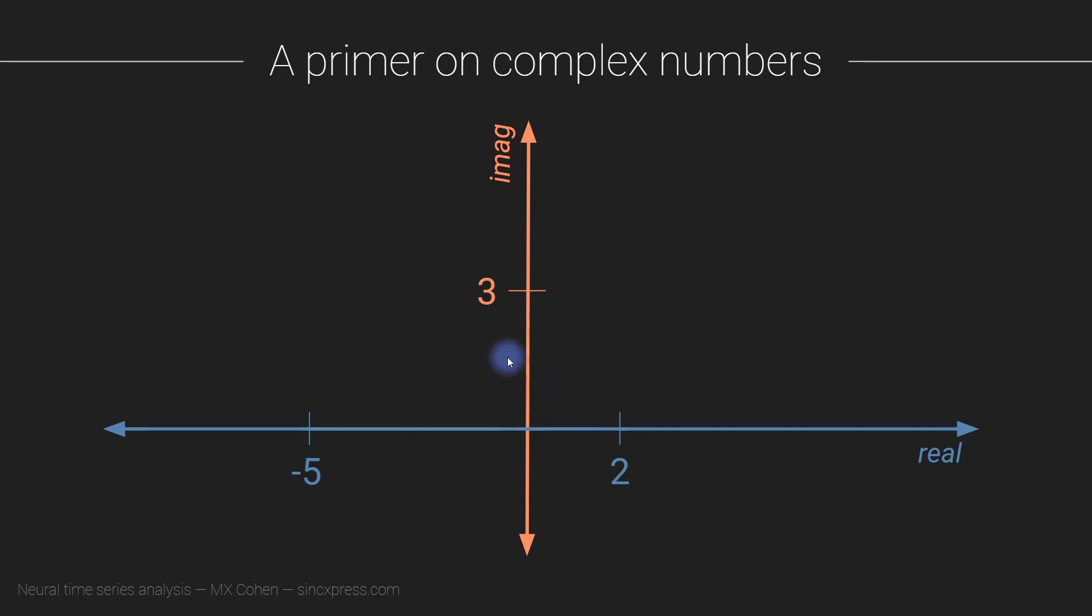Likewise, the unit on the imaginary axis is the number i, or the operator i. This is called the imaginary operator and is defined as the square root of minus one. Now this is a weird looking thing because square roots of negative numbers don't actually exist. And for that reason, they are given this special letter i. Sometimes people use j. Typically in mathematics literature you would see i, and in engineering literature you would see the letter j.